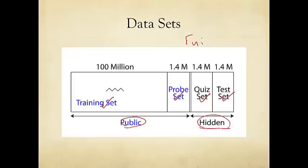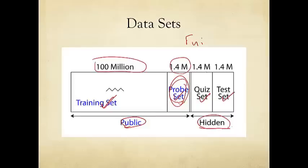As competitors, you have access to the training data — almost 100 million entries — plus 1.4 million probe data points. Since you have access to the probe data, you can hide it as ground truth, train your algorithm, and then evaluate recommendation accuracy on the probe set. It turns out the probe set's size and statistical characteristics, in terms of distribution of movies and users, are very similar to the quiz and test sets. So you can use the probe set to test your methods as frequently as you want. But the actual competition result is determined by your performance on the hidden data known only to Netflix.